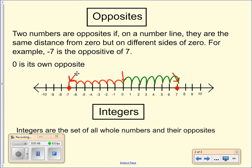Zero is its own opposite. Zero is the same distance away from zero.